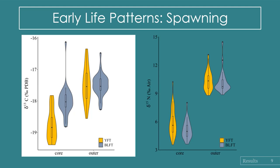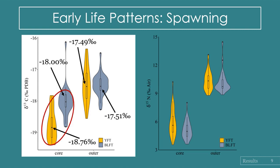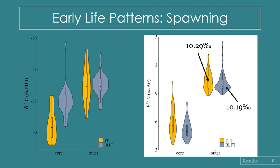These violin plots show the distribution and mean delta values of the outer lamina and the core. For delta carbon, the outer lamina means are generally the same for both species, but the core means are quite different. This could indicate that the two species have distinct spawning grounds, with yellowfin tuna spawning slightly more offshore in lower delta carbon environments than blackfin tuna. Moving on to delta nitrogen — again, the outer means are basically the same, and there is some difference in the core means, but because the scale of delta nitrogen is much larger than delta carbon, it's not as big a difference, and the distributions overlap considerably more.